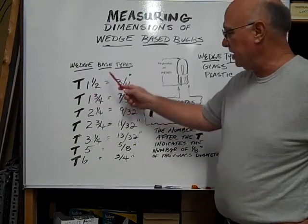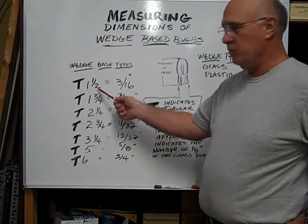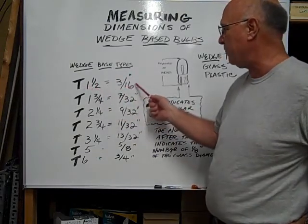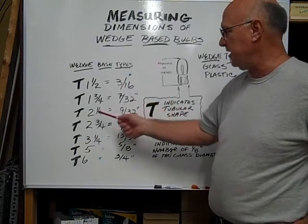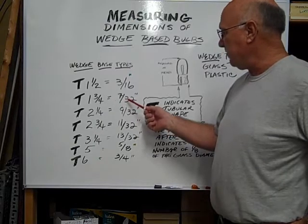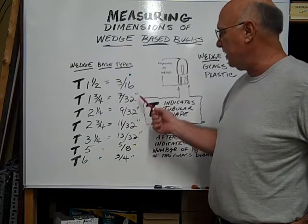So if this is actually a T two, it would be a quarter of an inch, two eighths. But this is a T one and a half which equals three sixteenths. A T one and three quarter equals seven thirty-seconds of an inch.